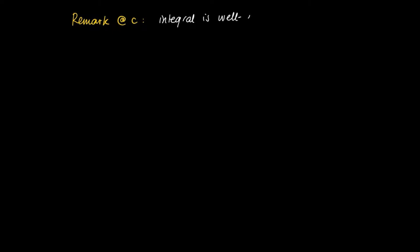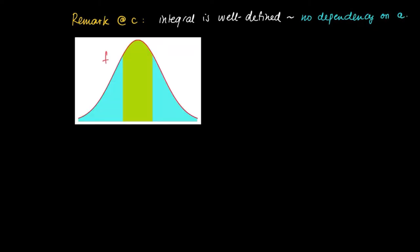Something important here is that the definition of the two-sided improper integrals is well-defined. In the definition we included the existence of an a, such that the integral from minus infinity to a, and the integral from a to infinity, both exist. So if this integral were to depend on a, then it would be a strange definition — it would not be well-defined.